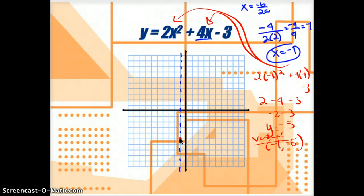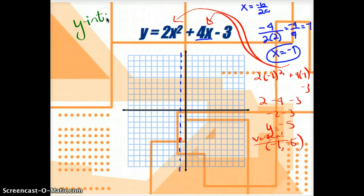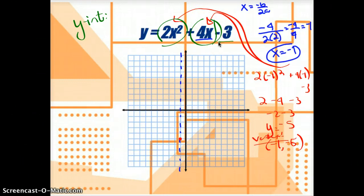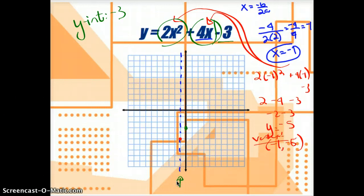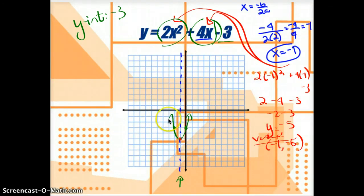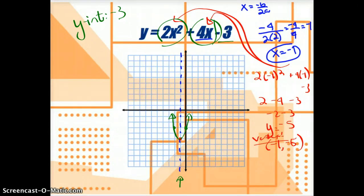The next step is find your y-intercept. That's always the value when x is 0, so those x terms become 0 and we just have negative 3. So my y-intercept is at negative 3 — that's just the value of c. When reflecting the y-intercept across the axis of symmetry at x equals negative 1, I notice my y-intercept is one unit to the right, so I plot it one unit to the left. Now I've got three points, and I connect them with a smooth curve to create my parabola. This is a great way to only need three points instead of a full table.